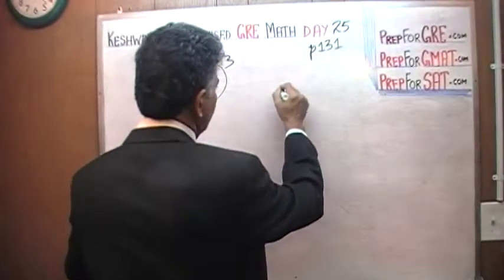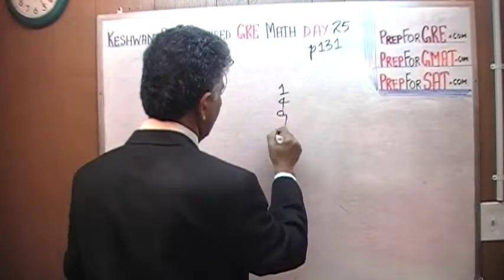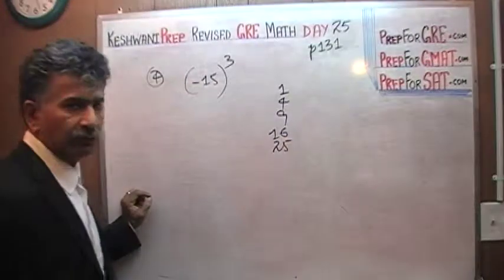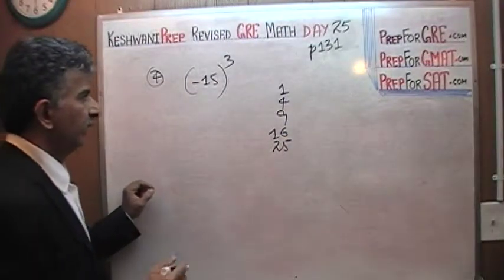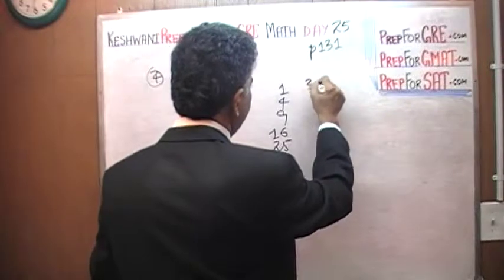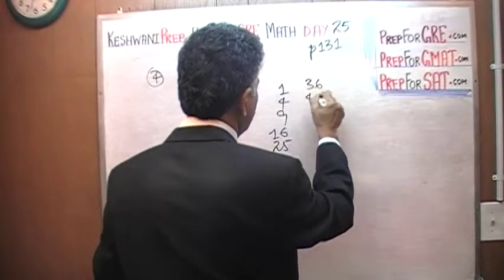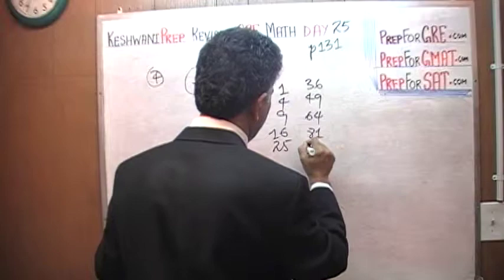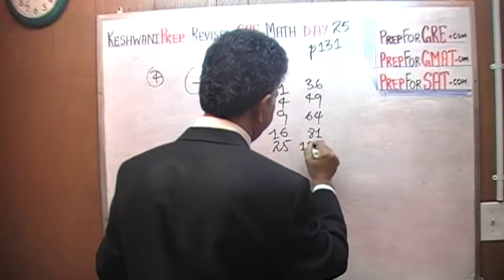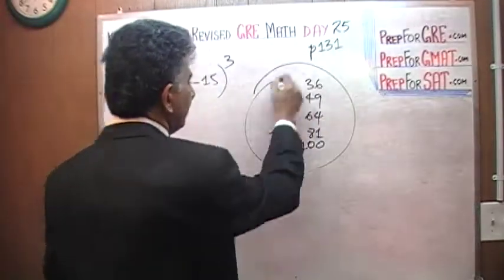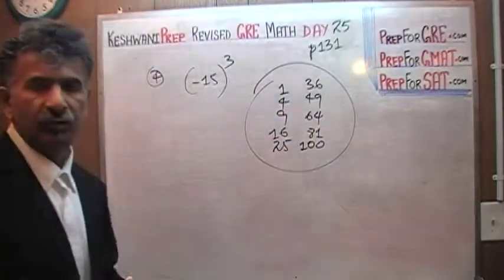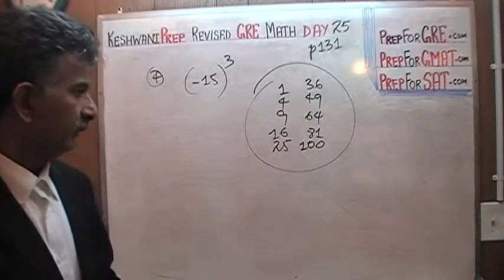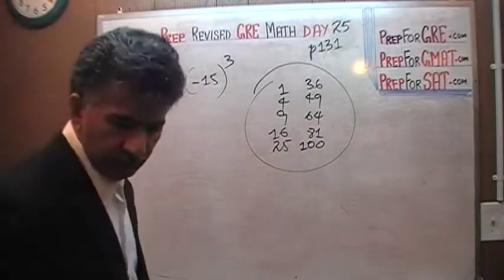Let's do them right here: 1 squared is 1, 2 squared is 4, then 9, 16, 25 — so far so good, not too many people have trouble with those. Then 6 squared is 36, 7 squared is 49, 8 squared is 64, 9 squared is 81, and 10 squared is 100. You must know these by heart — you shouldn't have to reach for the calculator to figure out what 8 squared is.